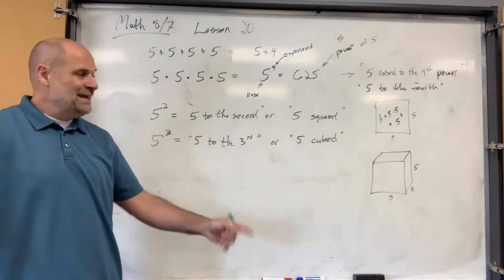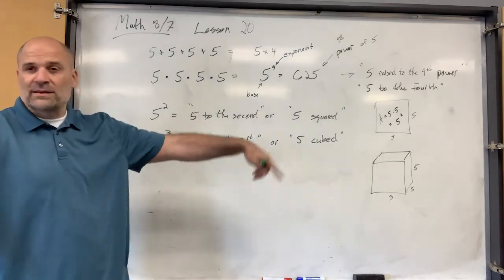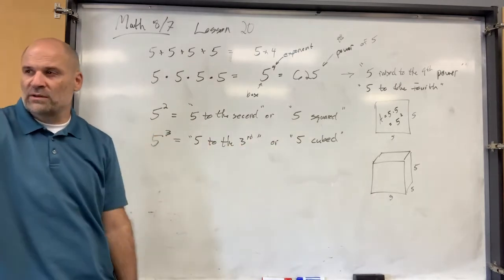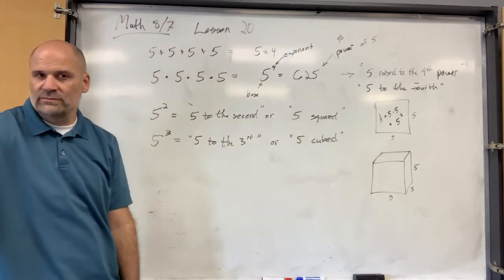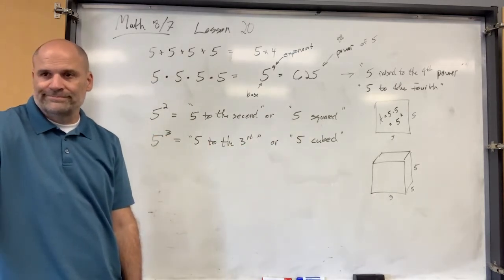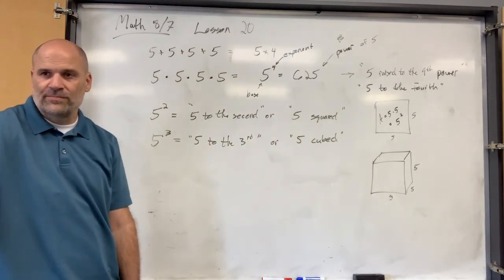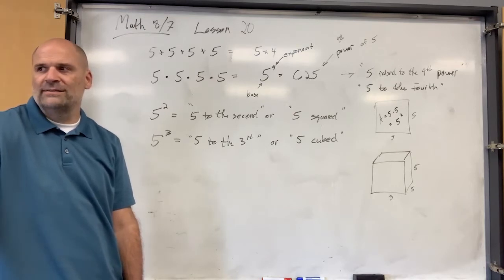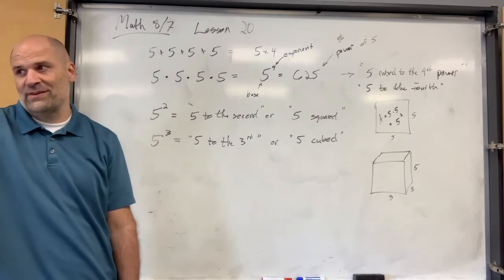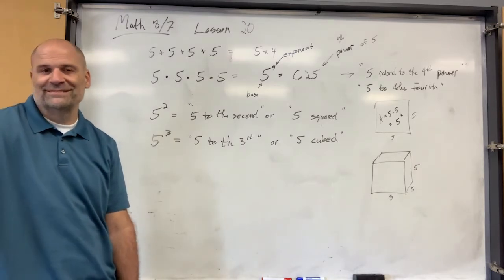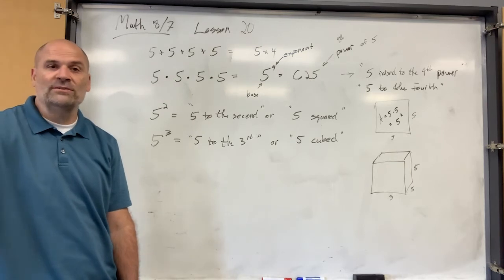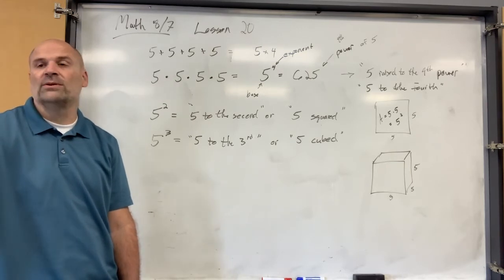Length times width times height — that's how you find the volume of that cube. So 5 times 5 times 5. What's 5 times 5 times 5? 125. Not 50, not 15 — 125.